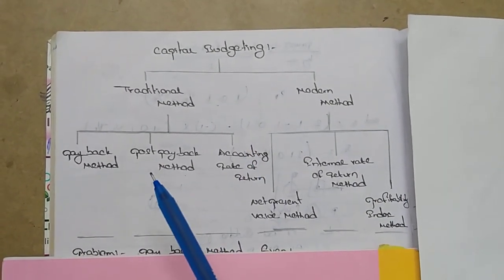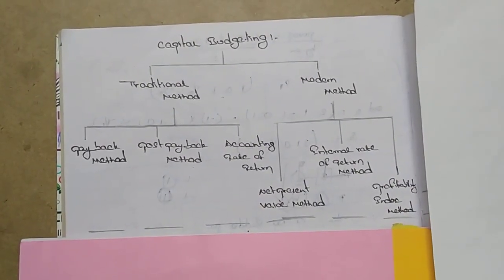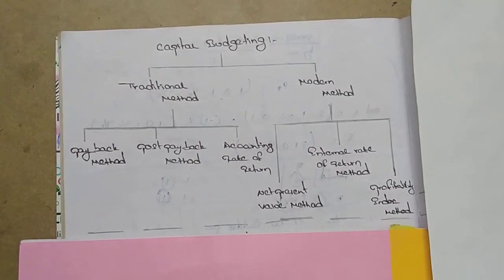In the traditional method, the first one is the payback method. In the payback method, there are two types of problems: first one is even, second one is uneven.